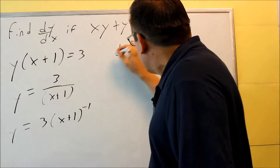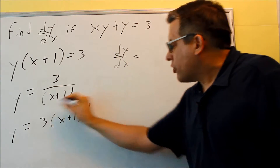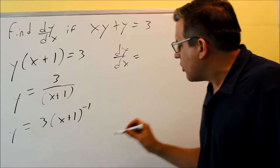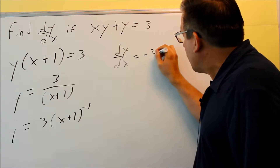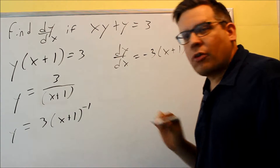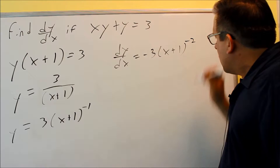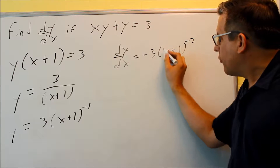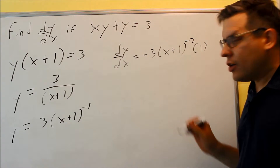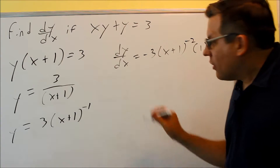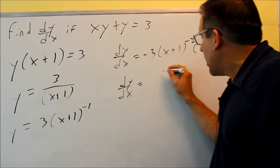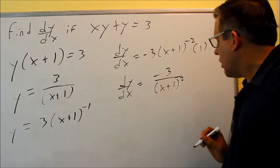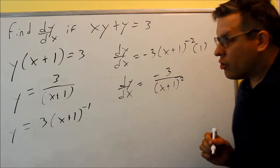For the chain rule, you do the derivative of the outside and multiply it by the derivative of the inside. The outside: negative 1 comes down, you get negative 3, and you subtract 1 from the exponent to get (x plus 1) to the negative 2. Don't forget to multiply by the derivative of the inside — there's a 1 in front of the x, so that derivative is 1. Rewriting, your final answer is negative 3 over (x plus 1) squared.